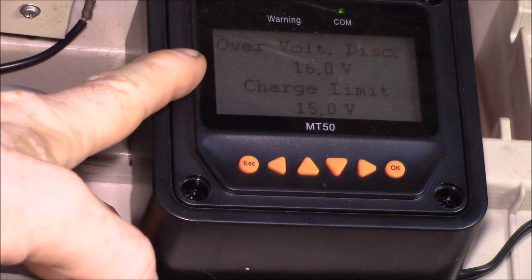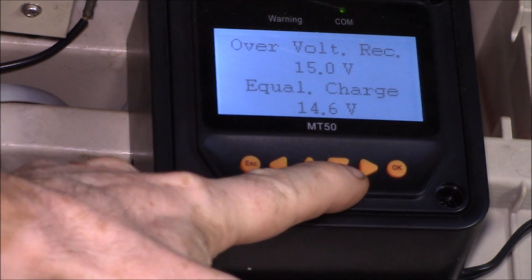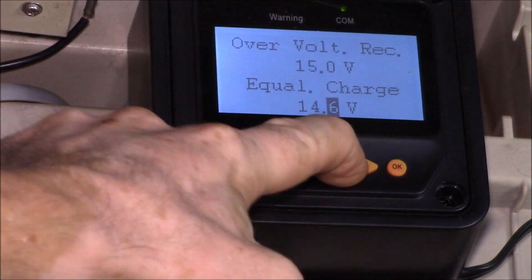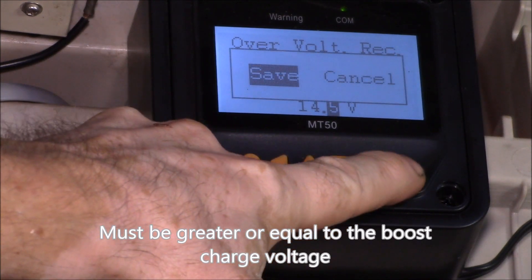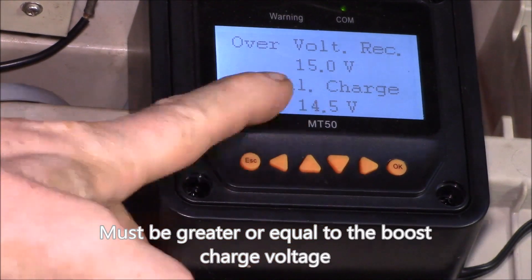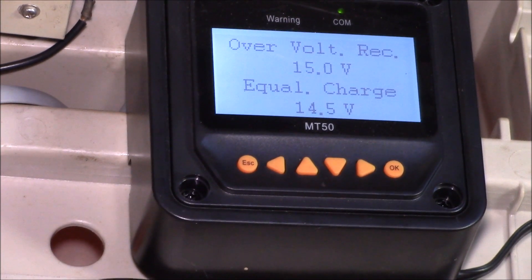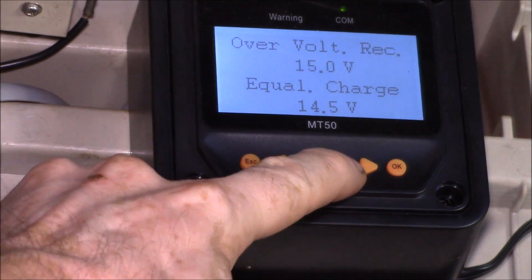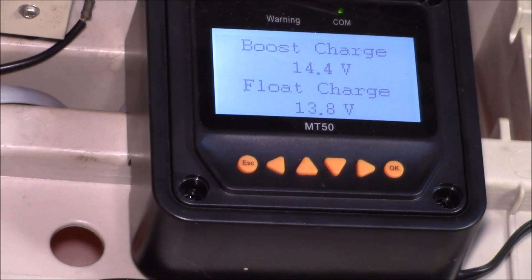We'll just go down the screens here. I've got the over voltage 16, the charge limit is 15, over volt is 15, equalized voltage I'm just going to set this to the same as my boost charge voltage. Later I'm going to set the equalized time to zero. If there's no equalized time and the voltage is the same as the boost charge, there's basically no equalization going on.